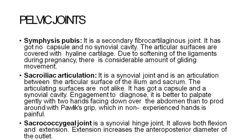Pelvic joints: Symphysis pubis is a secondary fibrocartilaginous joint — it has no capsule and no synovial cavity. The articular surfaces are covered with hyaline cartilage; due to softening of ligaments during pregnancy there is a considerable amount of gliding movement. Sacroiliac articulation is a synovial joint between the articular surfaces of the ilium and sacrum; the articulating surfaces are not alike but it has a capsule and a synovial cavity. The coccygeal joint is a synovial hinge joint that allows both flexion and extension; extension increases the anteroposterior diameter of the outlet.